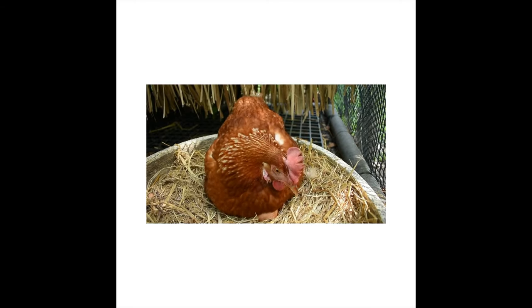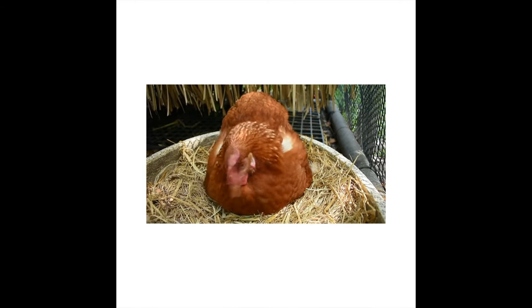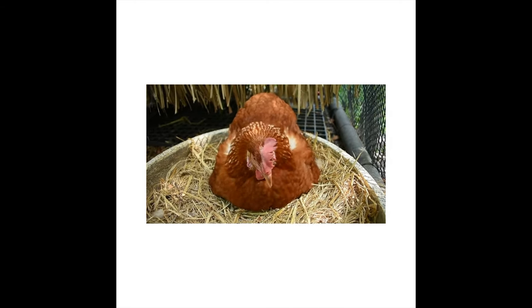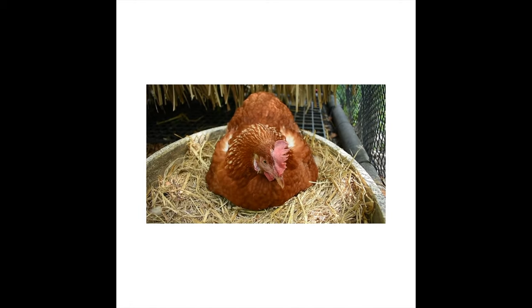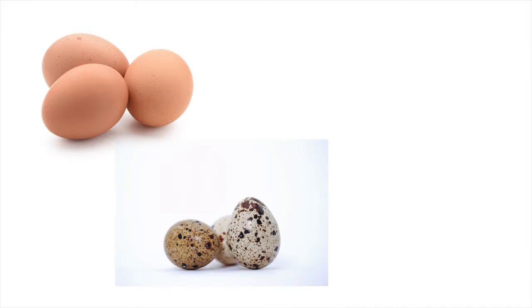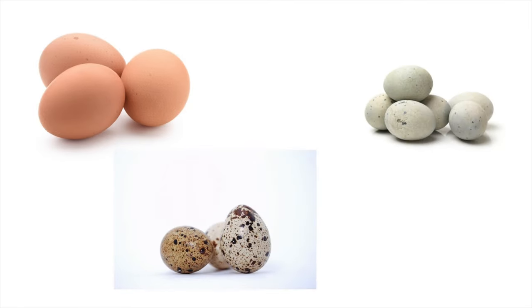Eggs come from chickens. So we say the chicken is laying eggs. These are chicken eggs. But there are other kinds of eggs. These are quail eggs. And I think these were goose eggs. I'm not sure.